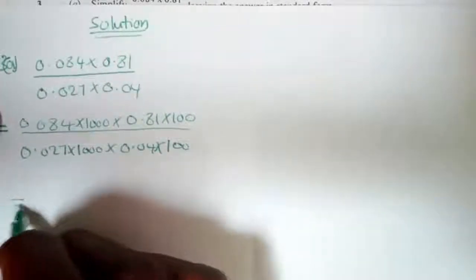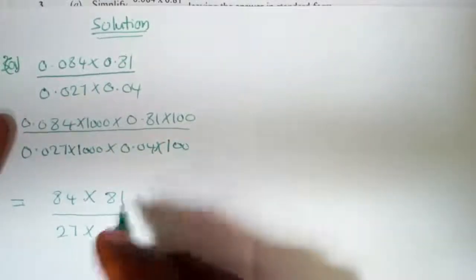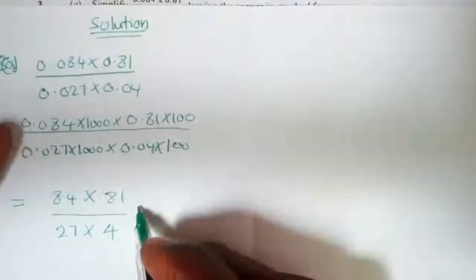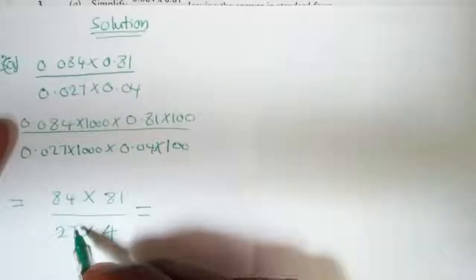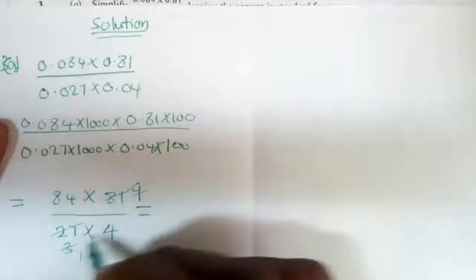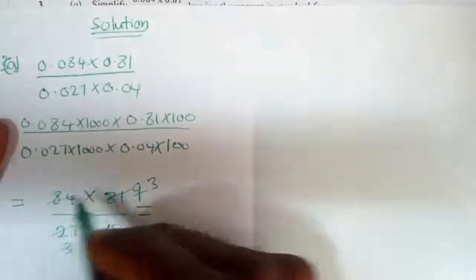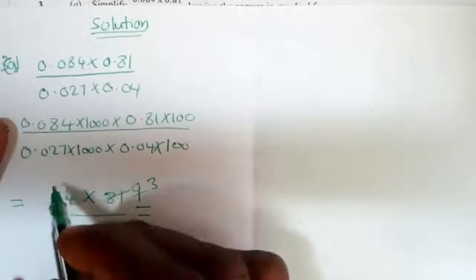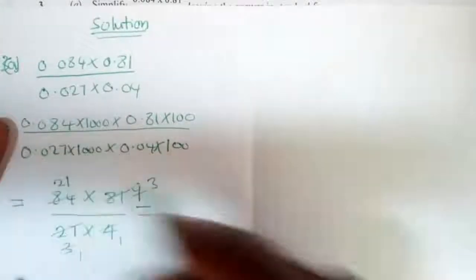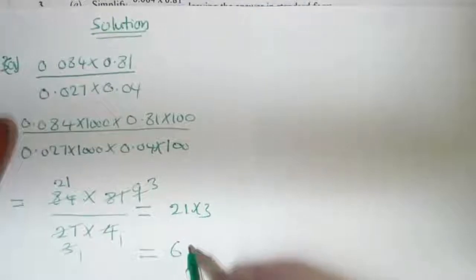So we have 0.027 times 1000 and 0.04 times 100 in the denominator. This converts everything into whole numbers, giving us 84 times 81 all over 27 times 4. We can then cancel: 27 goes into 81 three times, giving us 3, and 4 into 84 gives us 21.